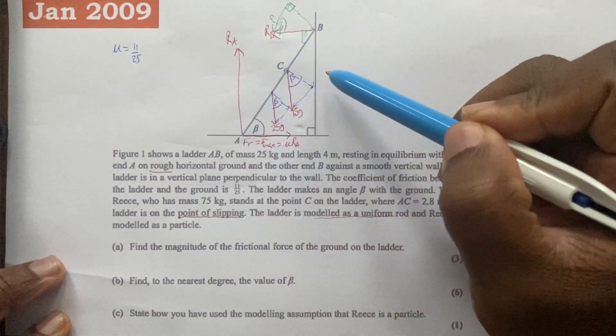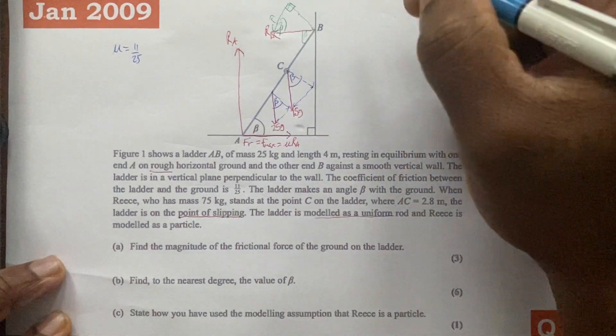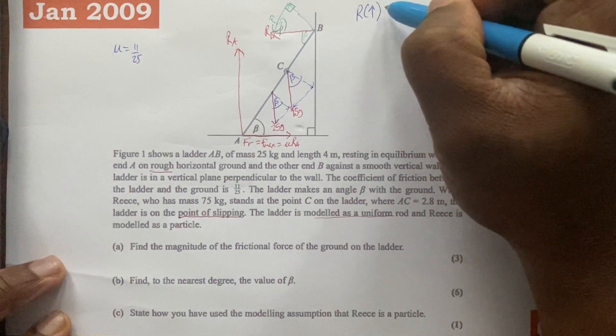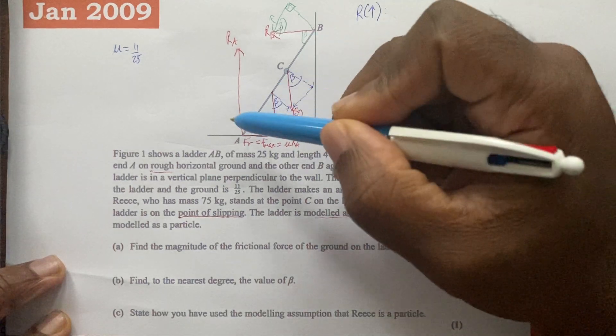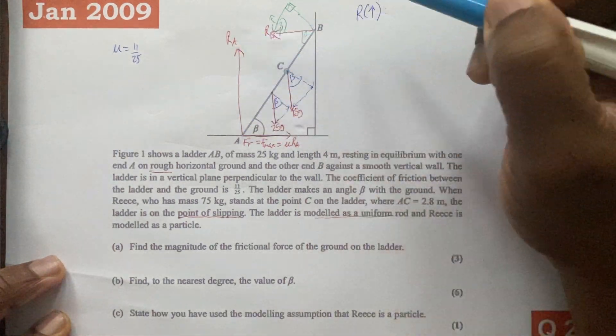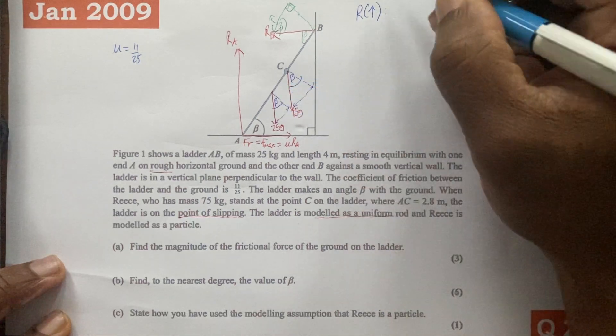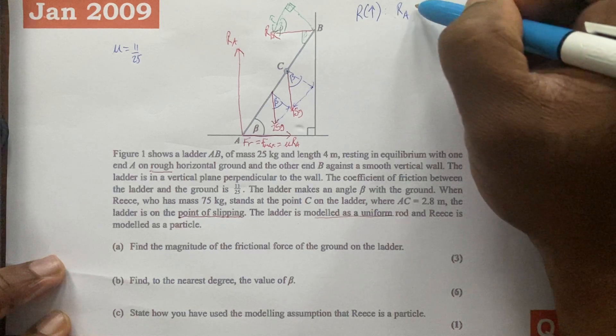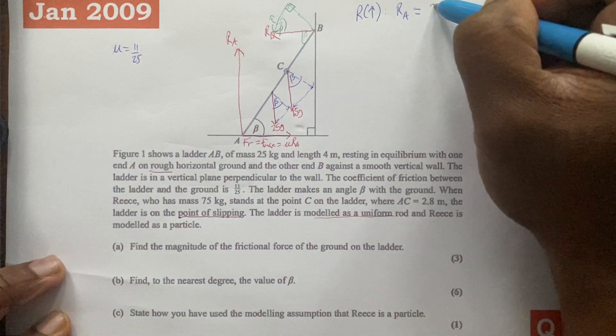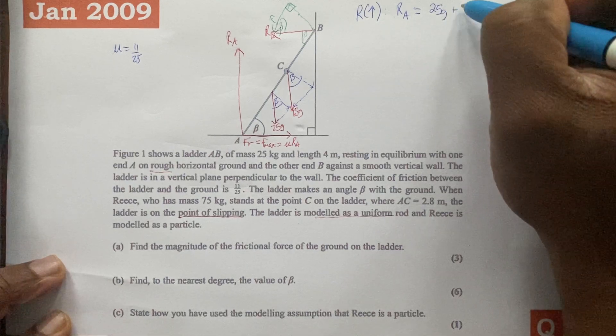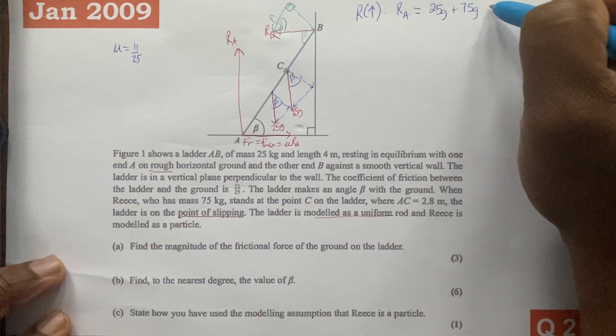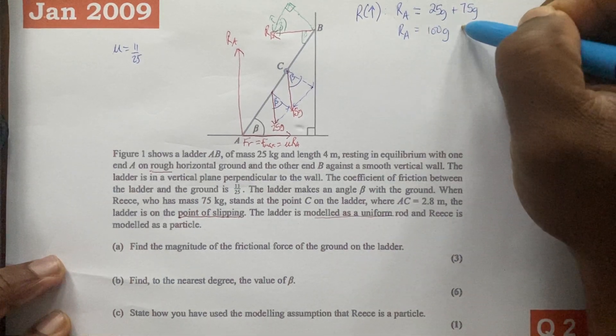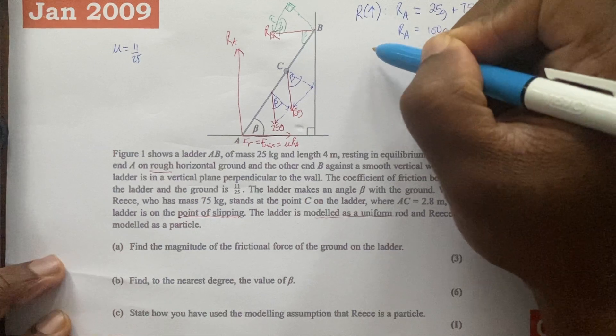Once we have that, we're going to resolve vertically. When we resolve vertically, the upward forces will sum and equal the sum of the downward forces because the ladder is in equilibrium. That means that normal contact force RA is equal to 25G plus 75G. We can simplify that: RA is equal to 100G, and that will be equation one.